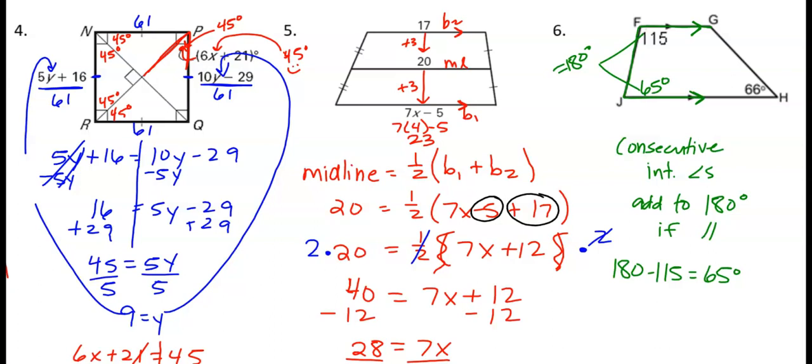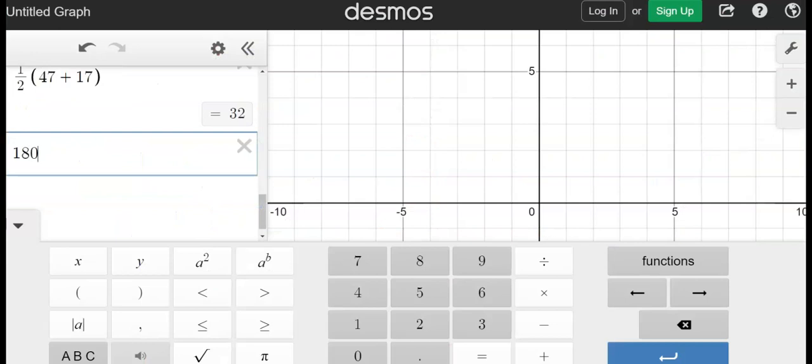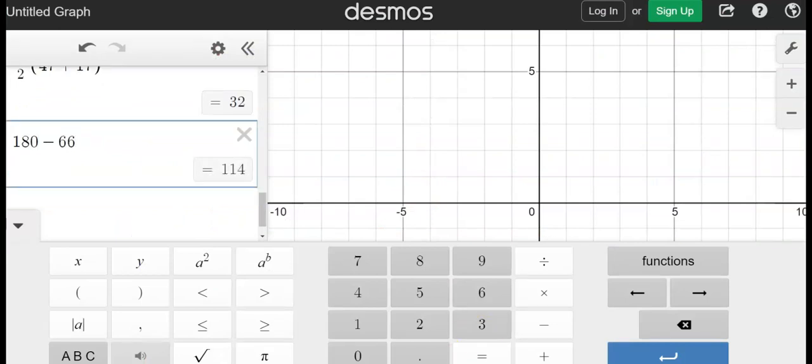And then you got options for angle G up top there. You can either do 360, take away 115, take away 65, take away 66. Or you can do consecutive interior angles going kind of the other way. So we still have parallel lines. We can make a backward C. So basically this one and this one are going to equal 180. So we can just do 180 take away 66. So that's going to be 114 degrees. I need to double check that. 180 minus 66. I think that's right. 114. We're good.